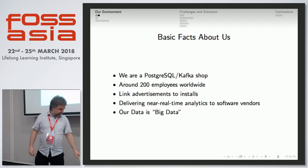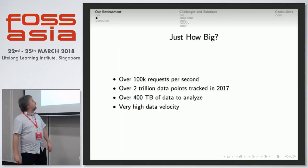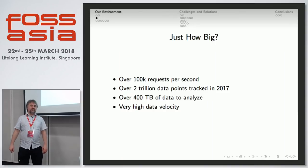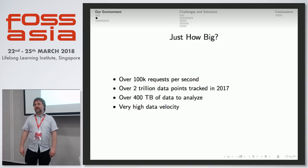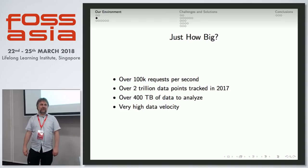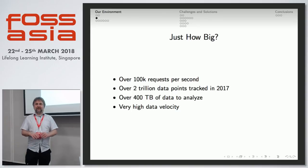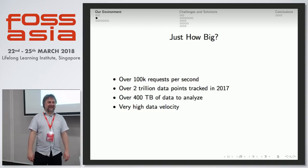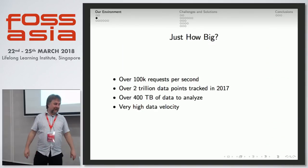Our data is big data. These numbers are very slightly out of date. It is over 100,000 requests a second — that's about the minimum we see in almost any given second. Peak times we see 300,000 sometimes, and we have seen 300,000 to 400,000 when a customer makes a mistake and accidentally turns the cell network into a botnet. This happens — it actually happened when I was giving a talk at PGConf Russia.